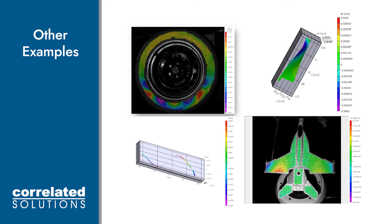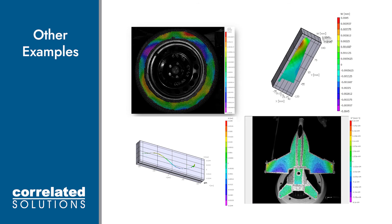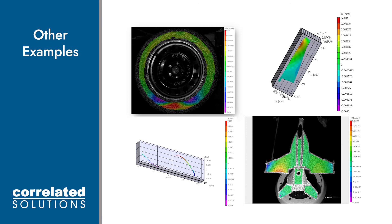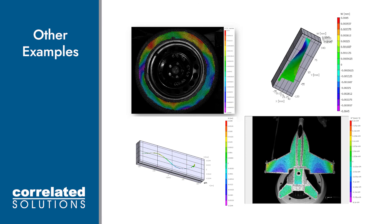We've also obtained measurements on many other types of applications. Here, we see a mounted tire, a turbine blade, and a cantilevered beam all being excited with a hammer tap. In the bottom right, we see a mounted model jet being excited by a shaker.